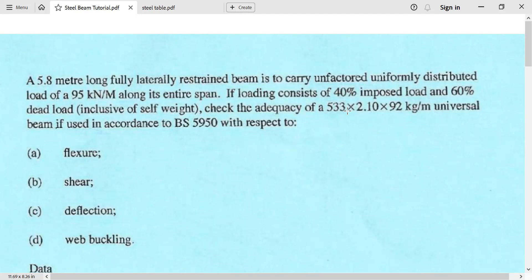check the adequacy of a 533 by 210 by 92 kilogram per meter universal beam if used in accordance to BS 5950 with respect to flexure, shear, deflection, and web buckling.